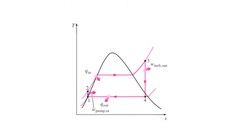This can also be shown on the TS diagram for the Rankine Cycle, as shown here. From Stage 1 to 2, we must first power our pump, which means we must have work going into the system. This pump then sends our water over to a boiler, where we have Q in, as shown here. The Q going into the system converts the water into superheated steam.